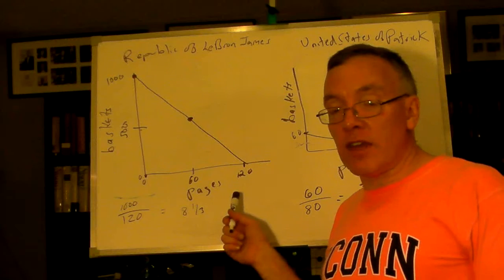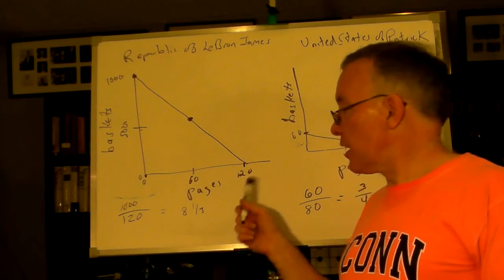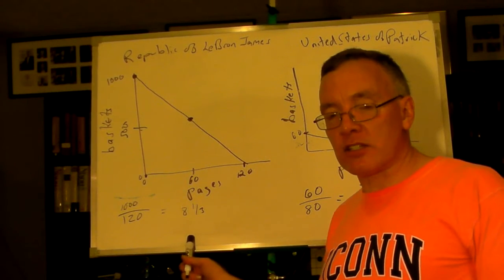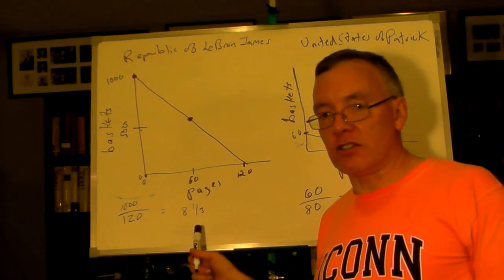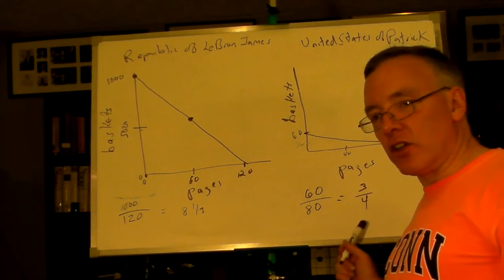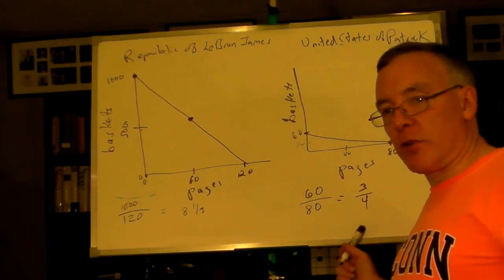his comparative advantage is not in typing. Because if he's going to type a page, it's going to cost him 8 and 1/3 baskets. That's his opportunity cost of typing. Well, for Patrick to type a page, he's only going to give up 3/4 of a basket.